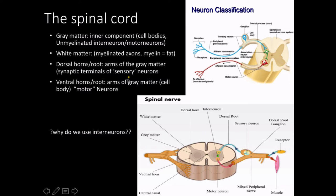The dorsal horn consists of a lot of sensory neurons, and then the ventral horn consists of a lot of motor neurons, as illustrated in the picture here. Notice that this sensory neuron would be considered pseudo-unipolar. You can think of sensory as afferent transmission and motor as efferent transmission.